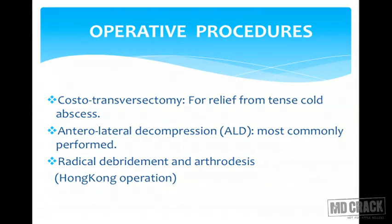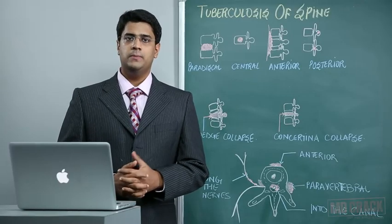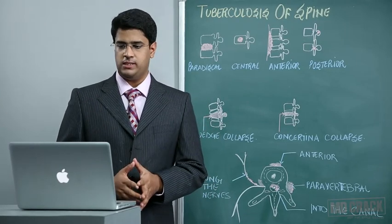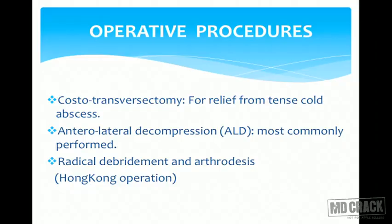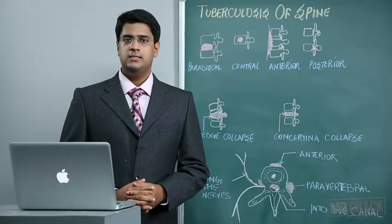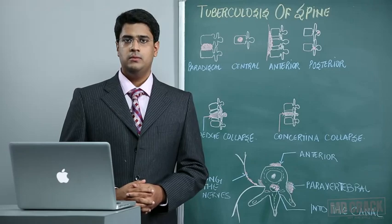Operative procedures for tuberculosis spine include: costotransversectomy, which removes part of the rib and transverse process to relieve a tense cold abscess; anterolateral decompression (ALD), which involves cutting the rib, transverse process, and part of the vertebral body; and radical debridement and fusion, also known as the Hong Kong procedure. This concludes the tuberculosis spine session.